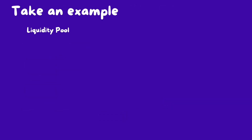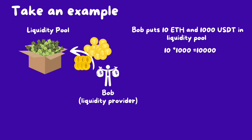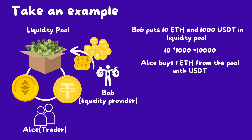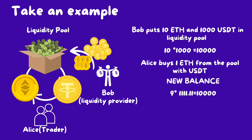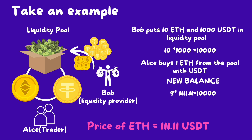Let me give you an example. Bob pools 10 ETH and 1,000 USDT in the liquidity pool — he is the liquidity provider. The function x times y equals k gives us 10 times 1,000 equals 10,000. Now Alice, the trader, wants to swap one ETH from the liquidity pool for USDT. After Alice exchanges the ETH, the quantities of the pool will reach a new balance. The price of ETH is about 111 USDT.